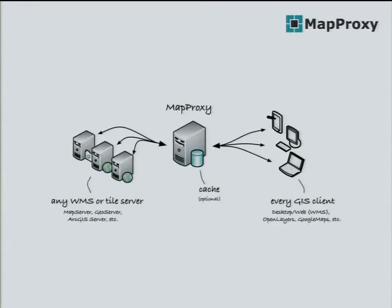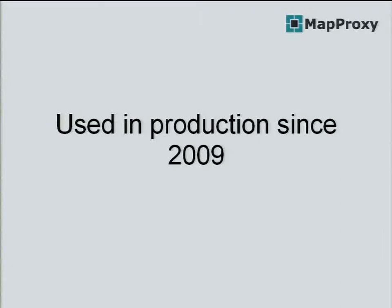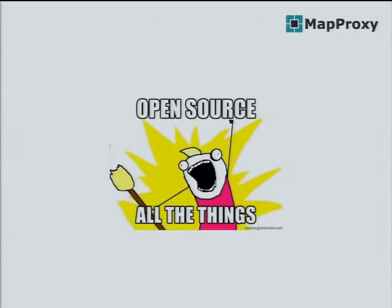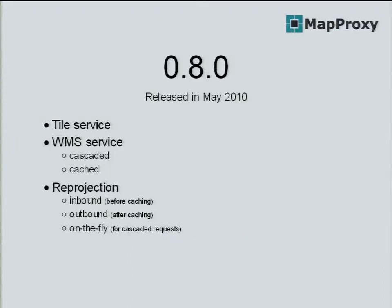Reprojection works outbound, inbound, and on the fly. When you have a cache in one projection it can reproject outbound data, but it can also reproject inbound — when you want to build a cache in one projection but your source doesn't support it. We used MapProxy in production since 2009, but it was only used by us. Software only gets better with more users and feedback, so we open-sourced MapProxy. All these features were in our first open-source release, version 0.8, in May 2010.